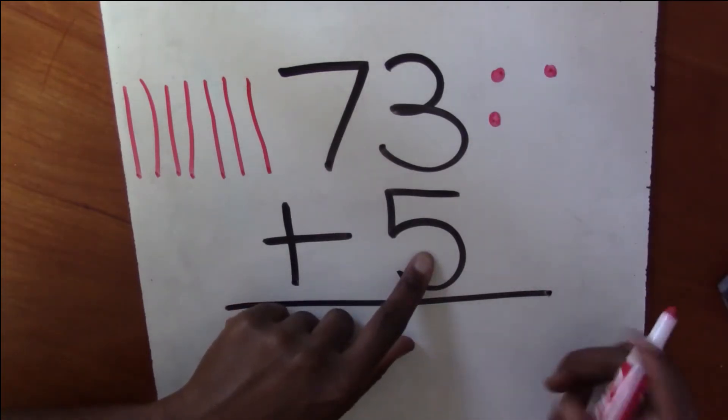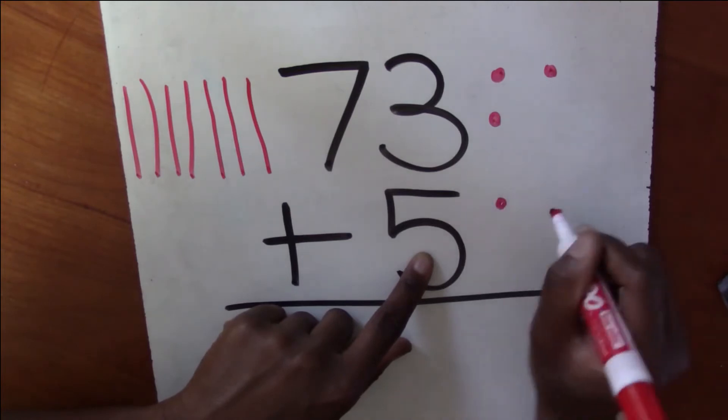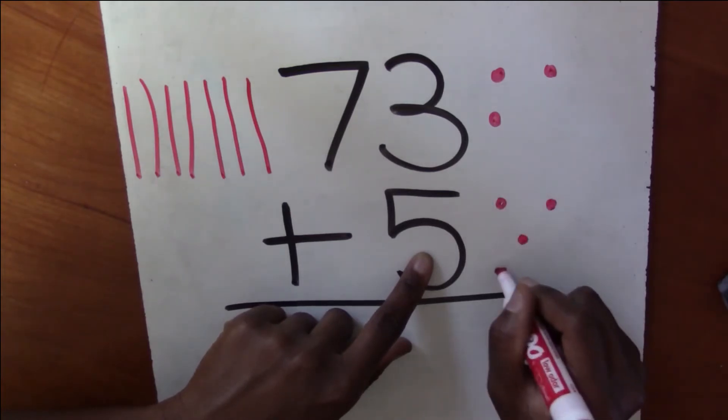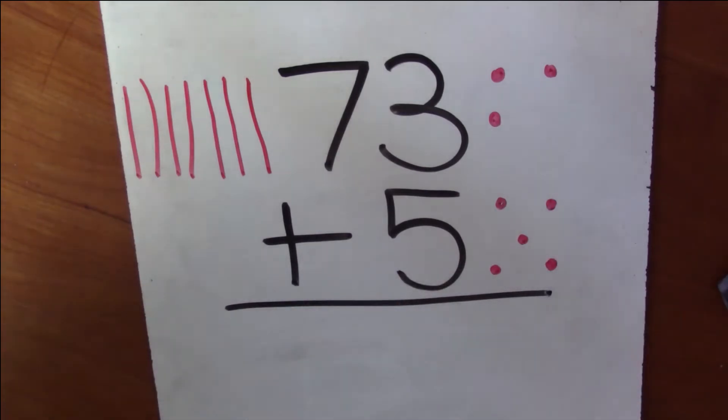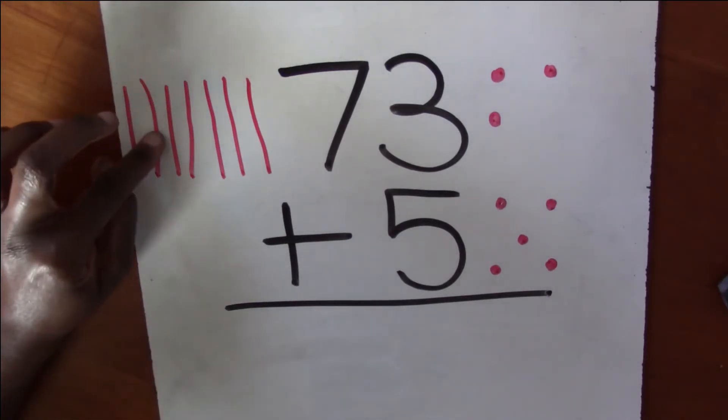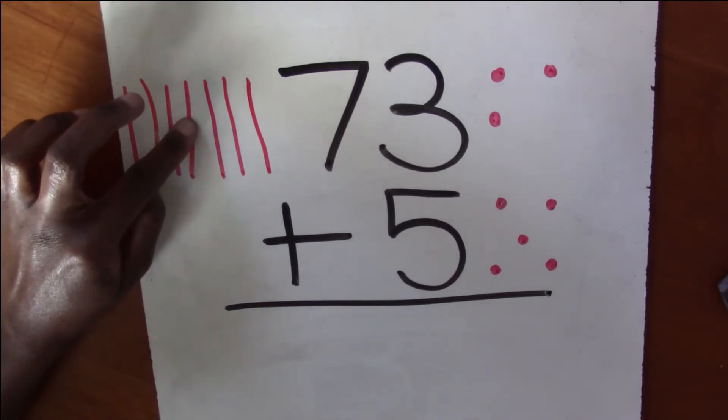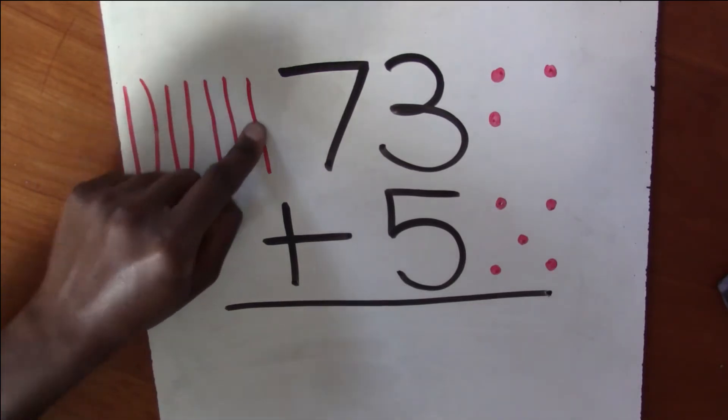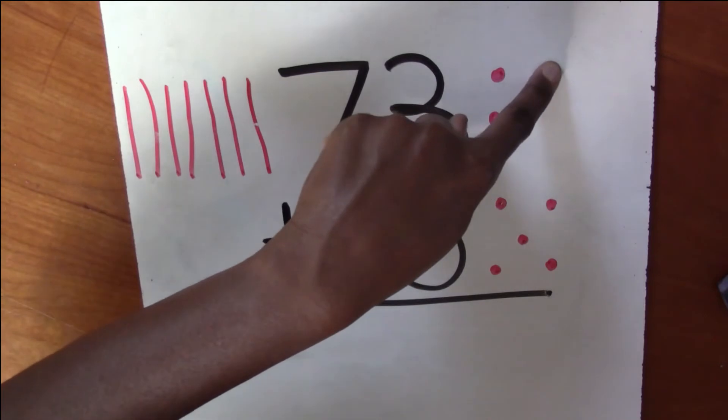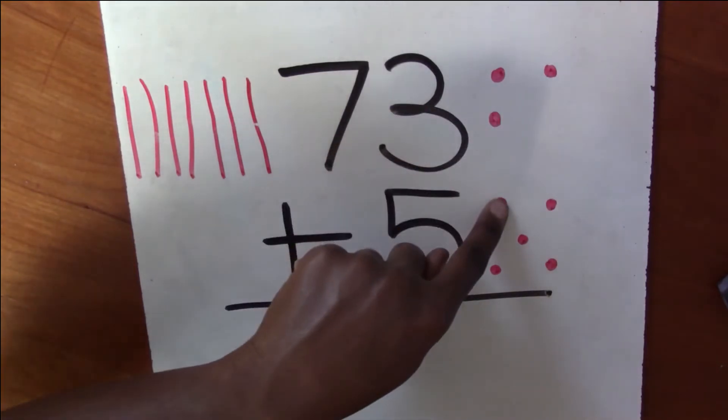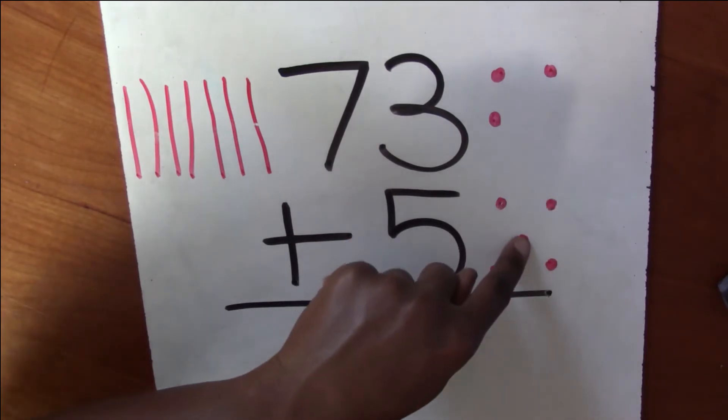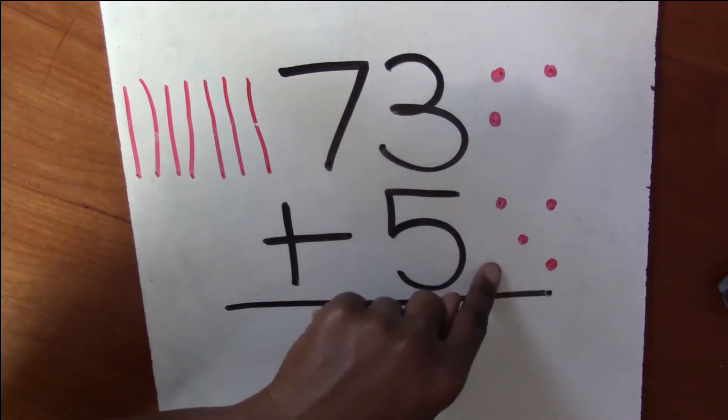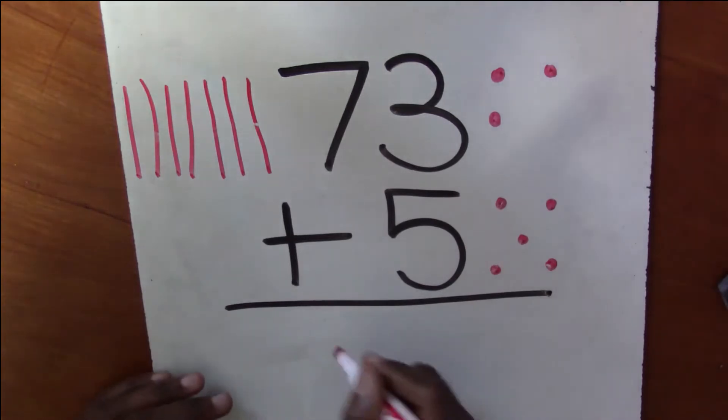Now I'm going to draw five ones. One, two, three, four, five. Now I'm going to count all of my 10 sticks all together. 10, 20, 30, 40, 50, 60, 70, 71, 72, 73, 74, 75, 76, 77, 78. My answer is 78.